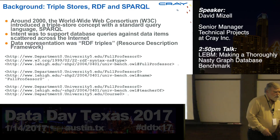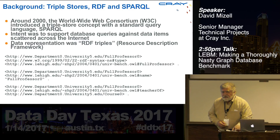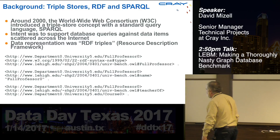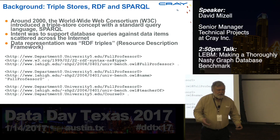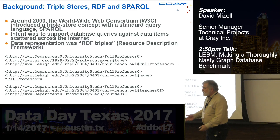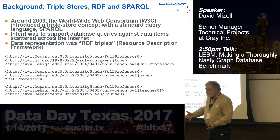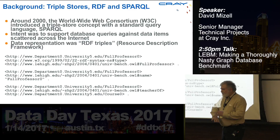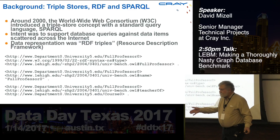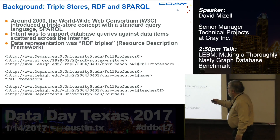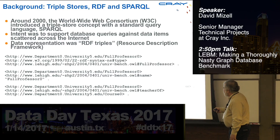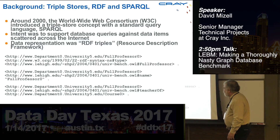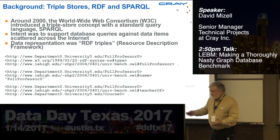Let me give you some background on graph databases and the kind we work on, called a triple store. Around the year 2000, the World Wide Web Consortium, which establishes standards for the internet, decided to create and spec out a database and query language for data scattered across the internet. They coined a standard query language called SPARQL and created a data representation called RDF triples — RDF stands for Resource Data Framework, which isn't going to be on the test.